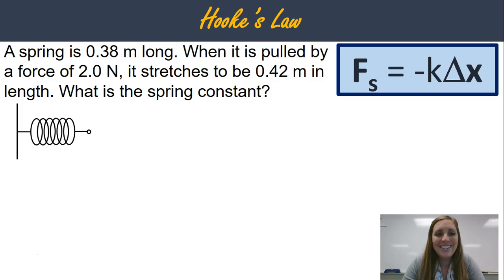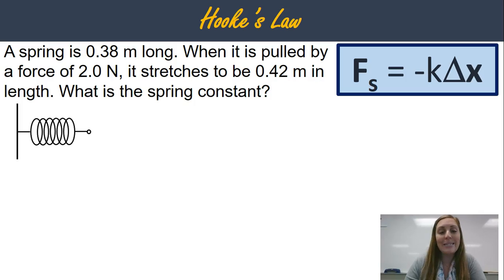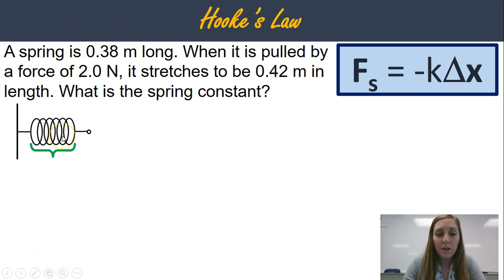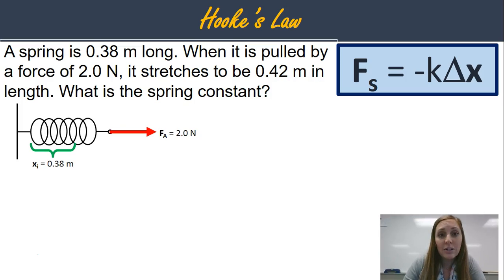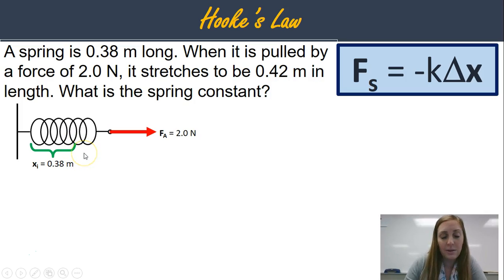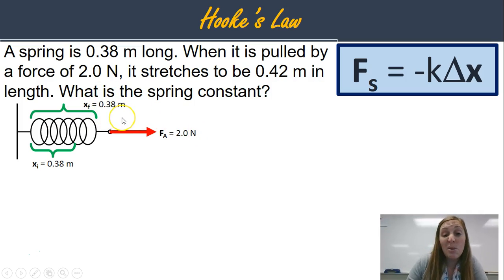Here is our last one. A spring is 0.38 meters long. When it is pulled by a force of two newtons, it stretches to be 0.42 meters in length. What is the spring constant? First, picture this: we've got a spring, we measured it at 0.38 meters, and then we're going to apply a force of two newtons. It stretches out — it doesn't end at 0.38 meters anymore. After we've applied that force, our final x is 0.42 meters.